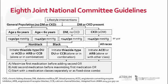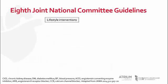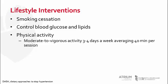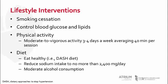For the rest of this presentation, we will discuss each part of this algorithm in more detail. Before initiating any medical therapy, lifestyle modifications should first be pursued, as seen as the first step of this treatment algorithm. Lifestyle interventions include smoking cessation, controlling blood glucose and lipids, moderate to vigorous physical activity about 3-4 times a week, and eating a healthier diet with reduced sodium intake of less than 2,400 mg per day and moderate alcohol consumption.